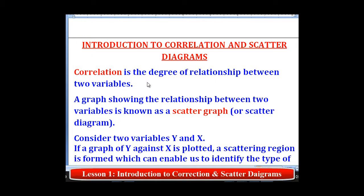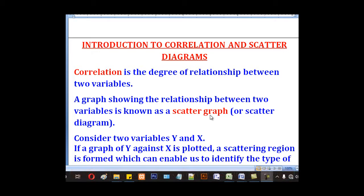Correlation is the degree of relationship between two variables. And the graph showing the relationship between two variables is known as a scatter graph or sometimes called a scatter diagram.